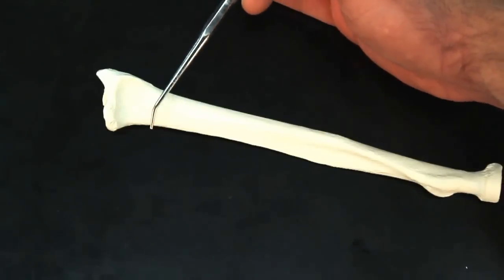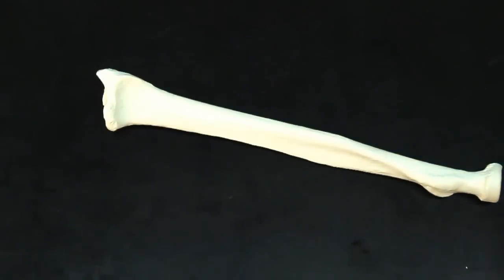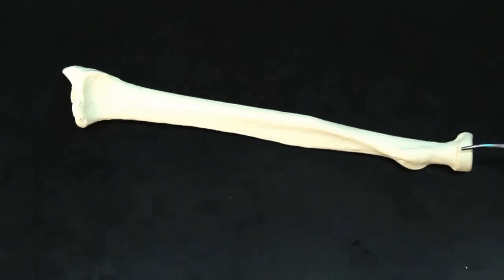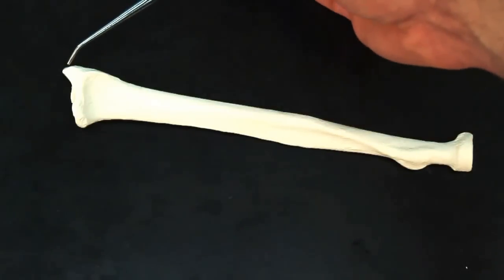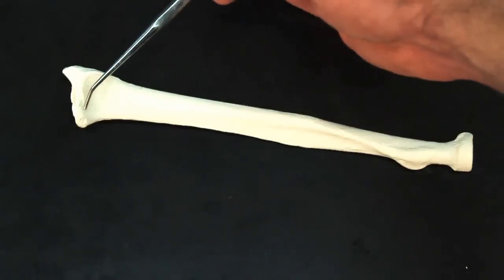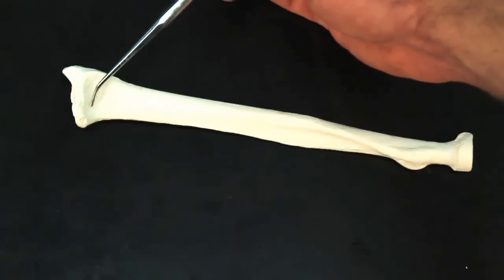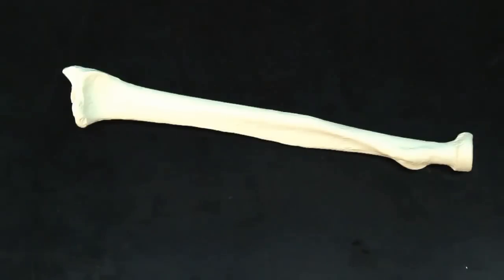That makes this a right radius. Head proximal, styloid process lateral, and this shallow scoop or shallow indent is going to be facing anterior. A right radius.